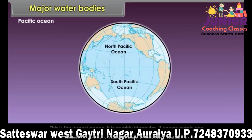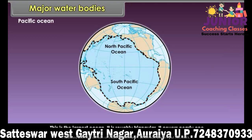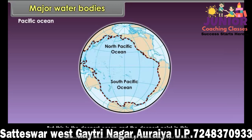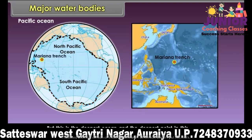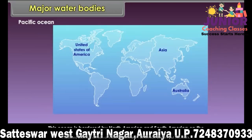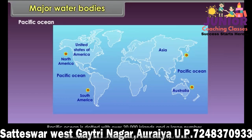Pacific Ocean. This is the largest ocean. It is roughly triangular and covers nearly one third of the earth's surface. The average depth of this ocean is 4572 meters. It is the deepest ocean, and the deepest point is the Mariana Trench. This ocean is bordered by North America and South America on the east, and Asia and Australia on the west. The Pacific Ocean is dotted with over 20,000 islands and a large number of marginal seas.